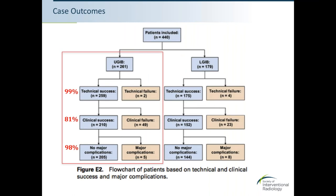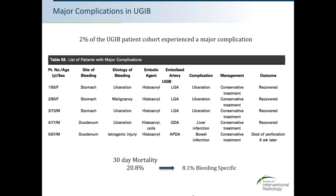For upper GI bleeds, technical success was 99%; 80% of cases were achieved with NBCA alone, without additional hardware. Of the 19% who experienced clinical failure, re-bleeding occurred at a median of approximately two days. About 2% experienced a major complication, most commonly ulceration; four out of five were managed conservatively with complete recovery, though one mortality occurred following duodenal perforation and sepsis. Of technically successful upper GI cases, 20% all-cause mortality was noted, with 8% being bleeding-specific.